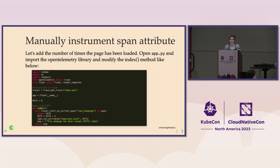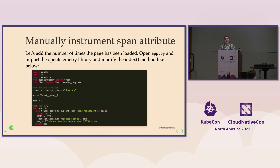Now let's add a span attribute. In this case, we want to see how many times the page has been loaded — maybe that's an interesting metric to track. We're going to hop into your IDE, open up the sample application, and find app.py. We're going to manually import the OpenTelemetry library and modify the index method, which is attached to the slash route. The things you're going to bring in from OpenTelemetry: import trace. You're going to instantiate a tracer — we'll call it 'demo app.' And then we're going to drop into the index method.